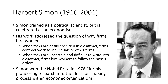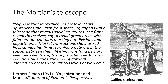Simon won the Nobel Prize for his pioneering research in the decision-making process within economic organizations. He highlights this with his Martian telescope analogy, describing firms as solid green areas with faint interior contours marking out divisions and departments. Market transactions show as red lines connecting firms, forming a network in the spaces between them. Within firms, pale blue lines represent the lines of authority connecting bosses with various levels of workers, mapping out whether individuals are engaging in transactions or responding to a chain of command.